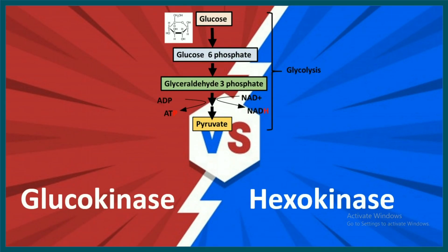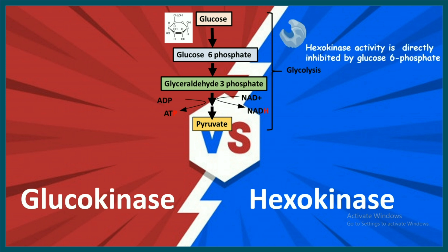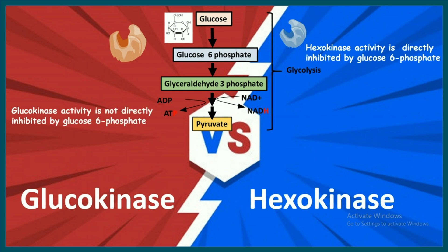Next, let's look at regulation. Glucose gets converted to glucose-6-phosphate in the glycolysis pathway. Hexokinase activity can be directly inhibited when there is too much glucose-6-phosphate, because if you have excess glucose-6-phosphate, you don't need to run glycolysis — you can divert to the pentose phosphate pathway or glycogen synthesis. Glucokinase activity, however, does not get directly inhibited by glucose-6-phosphate; instead, it gets indirectly inhibited by fructose-6-phosphate.